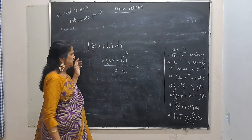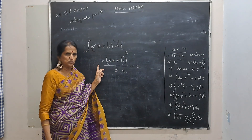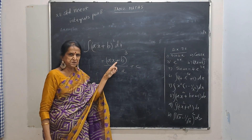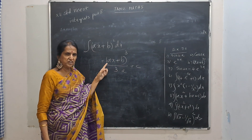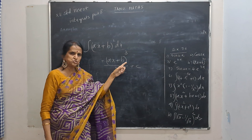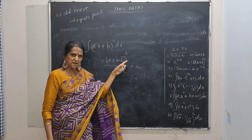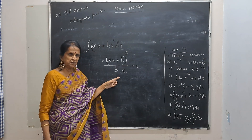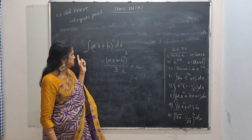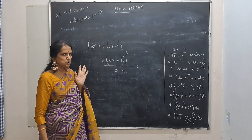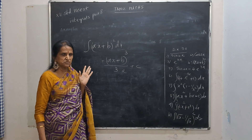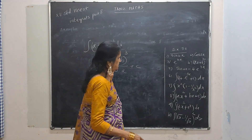Differentiate this: 3 into (ax + b) squared into derivative of ax + b, which is a. The 3 and a from denominator cancel, and the 3 in the numerator from the power rule also cancels. You will get the same answer. So this will be the integration of (ax + b) squared.